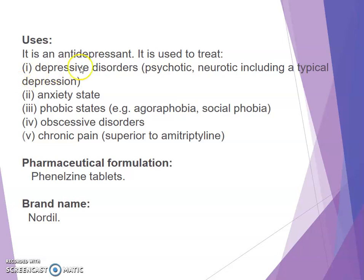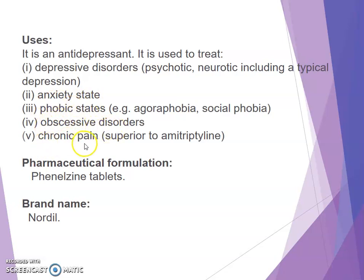Uses: phenelzine is an antidepressant used to treat depressive disorders including psychotic and neurotic atypical depression, anxiety states, phobic states, obsessive disorders, and chronic pain. Pharmaceutical formulation: available as phenelzine tablet. Brand name: Nardil.